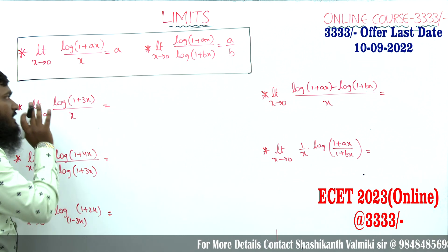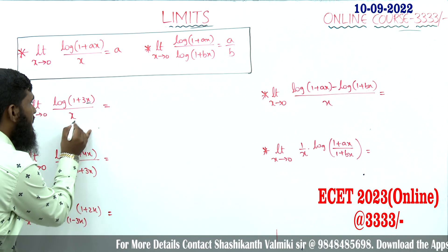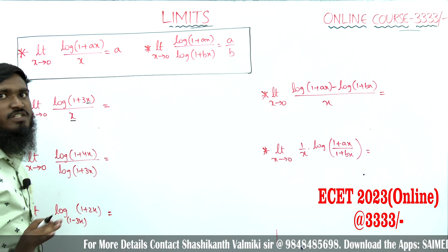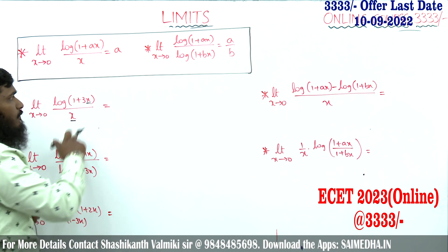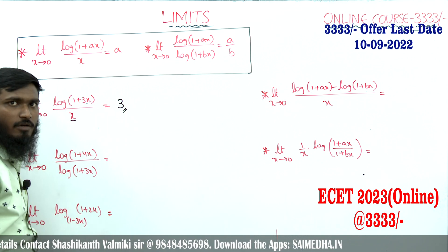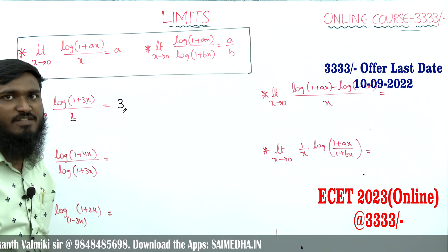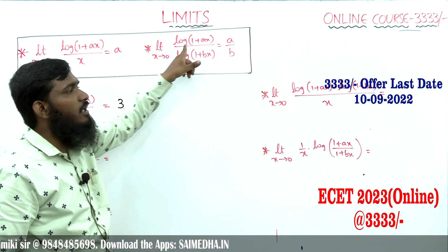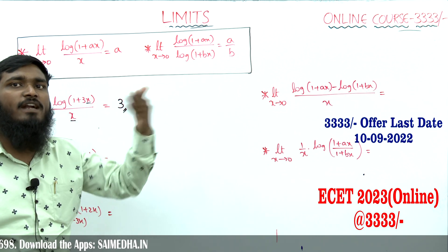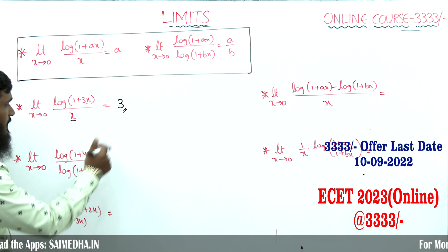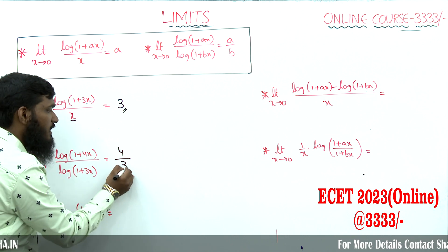Practice: limit x tends to 0, log(1 + 3x) divided by x — the x parts are the same and x tends to 0, so the answer is a equals 3, written as 3. Next: limit x tends to 0, log(1 + 4x) divided by log(1 + 3x) — this is in the form a over b, so a equals 4 and b equals 3, giving the answer 4 over 3.